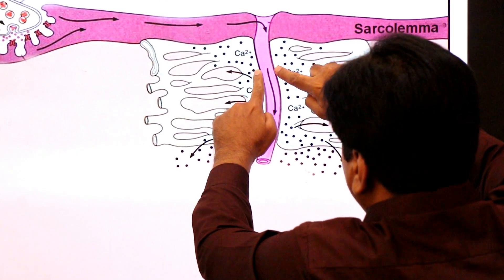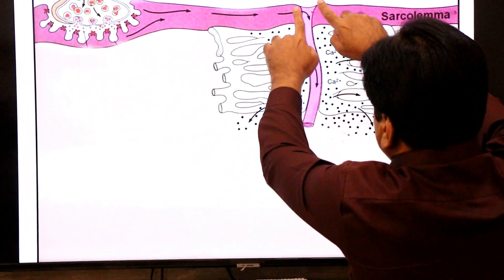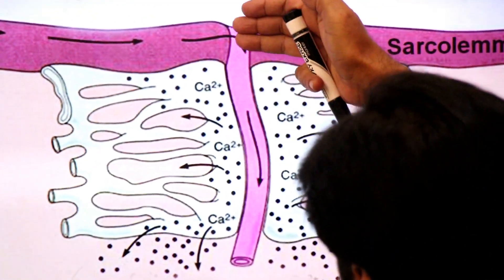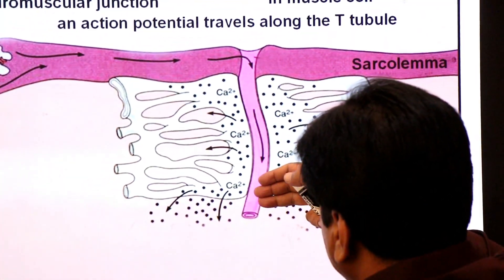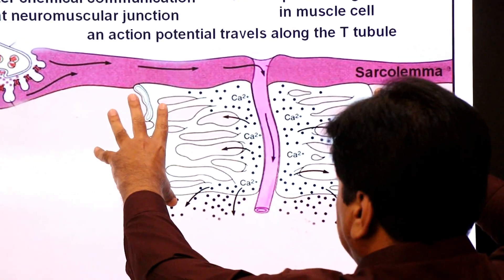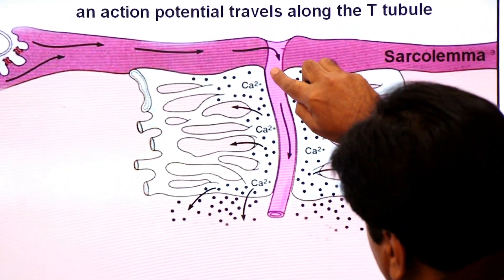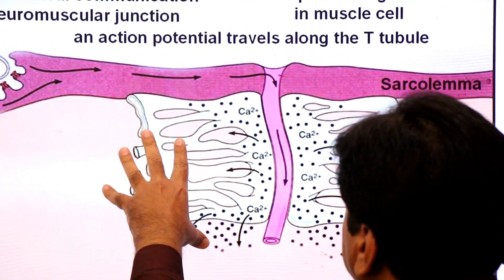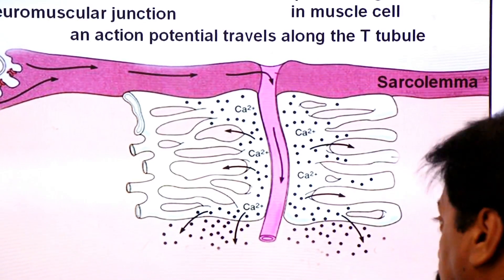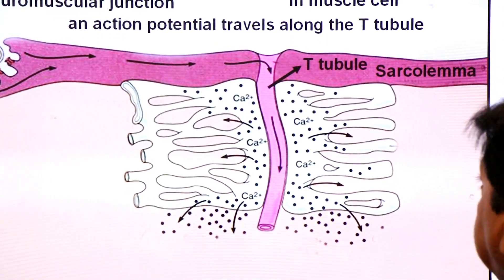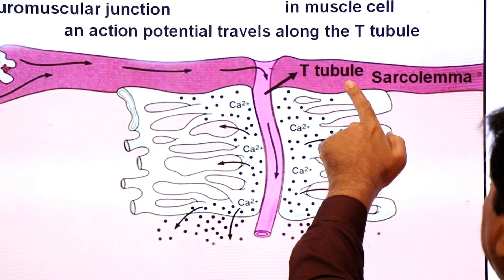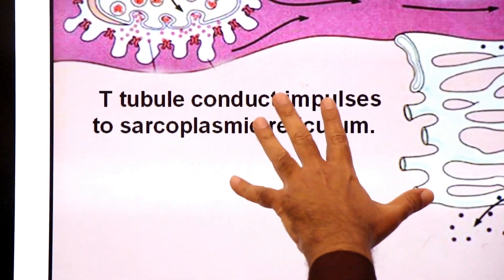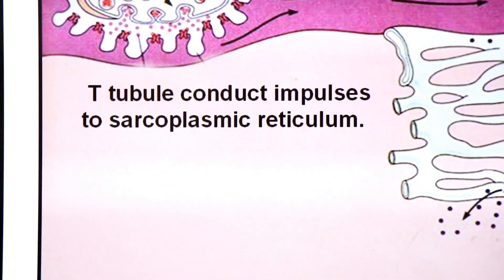The T-tubule is the invaginated part of the plasma membrane — the sarcolemma — so it can conduct the action potential inward. On the other side is the smooth endoplasmic reticulum. The T-tubule conducts impulses and signals to the sarcoplasmic reticulum, which is the smooth endoplasmic reticulum present in the muscle cell.